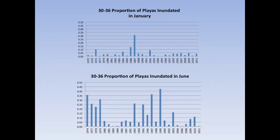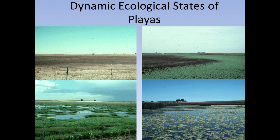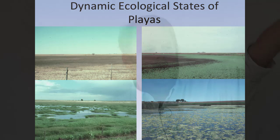Over a longer time period and greater spatial area — Landsat imagery from the 1970s to 2011 — this shows the proportional playas that are wet on the landscape on a much greater scale. We have a great deal of variability across time and even within years, since above is January and below is June. Playas change all the time — it's a very dynamic state. They can range from very dry to something that looks like a typical wetland, as this set of photos of the same playa over a three-year period shows.